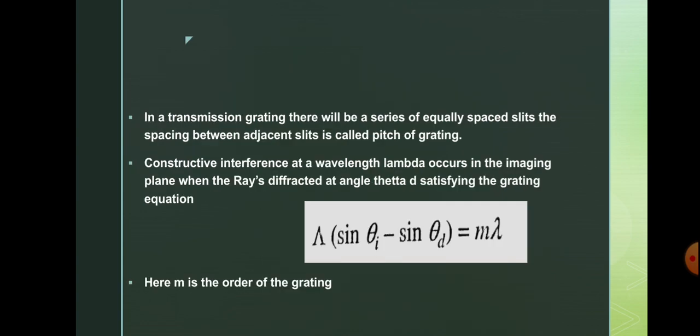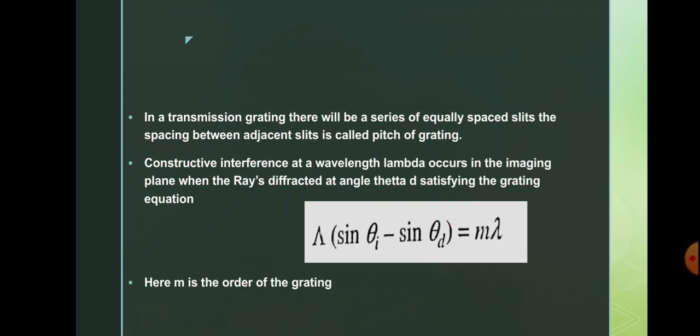In the case of a transmission grating, there will be a series of equally spaced slits, and the spacing between the adjacent slits is called the pitch of grating. The constructive interference at wavelength lambda occurs in the imaging plane when rays diffracted at an angle theta d satisfy the grating equation: Gamma times (sin theta i minus sin theta d) equals m lambda. Here m is the order of the grating.